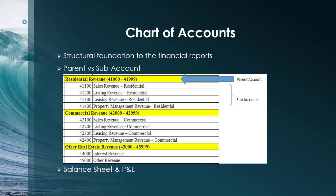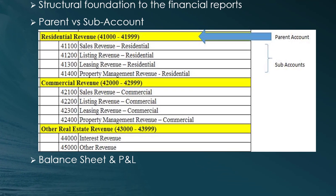There are two types of accounts: parent accounts, and sub-accounts to the parent accounts. This is a very important concept to understand when developing the chart of accounts. To give an example, on the profit and loss statement, we're going to create a parent account for residential revenue — highlighted in yellow. Under it, we'll create multiple sub-accounts: sales revenue, listing revenue, leasing revenue, and property management revenue that feed into the parent account of residential revenue.